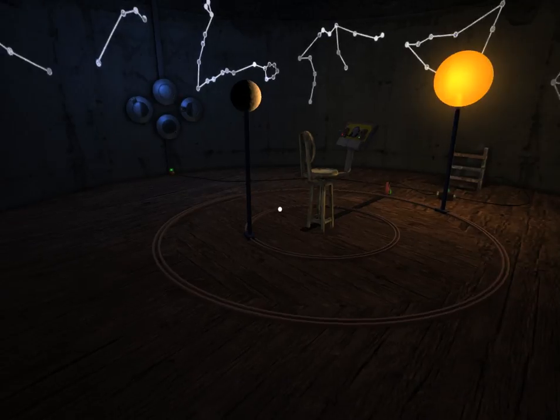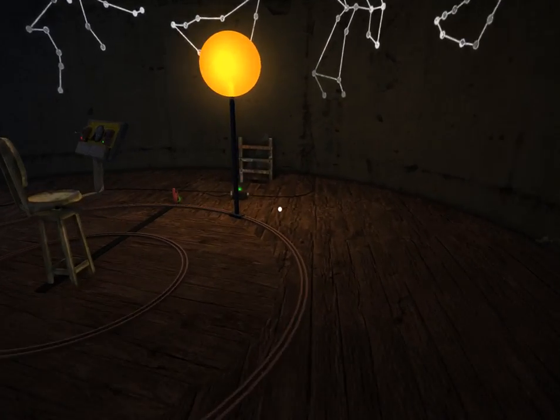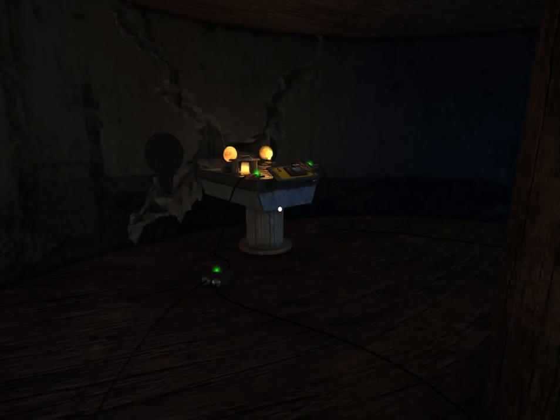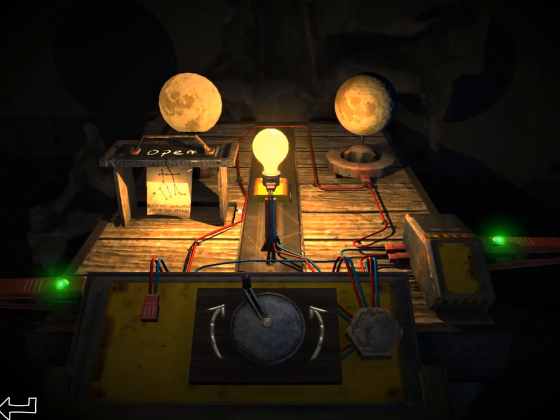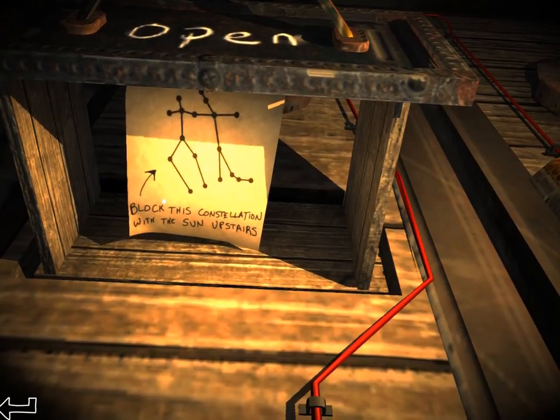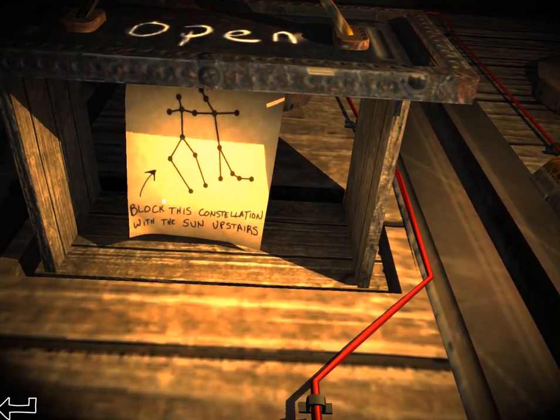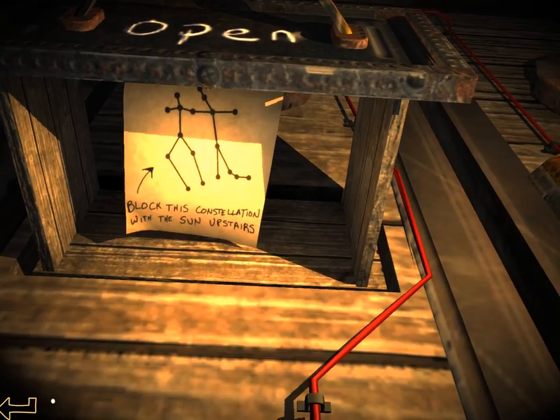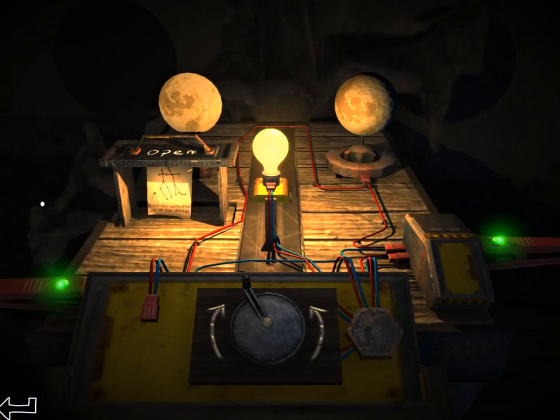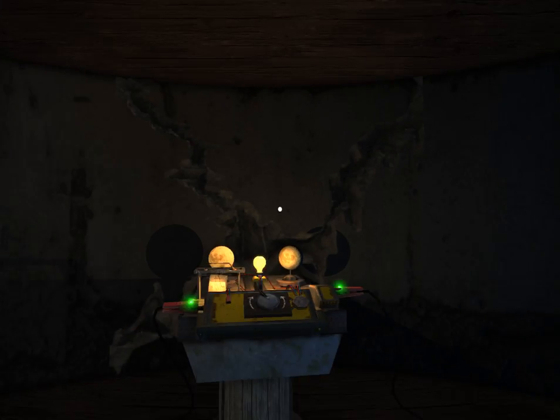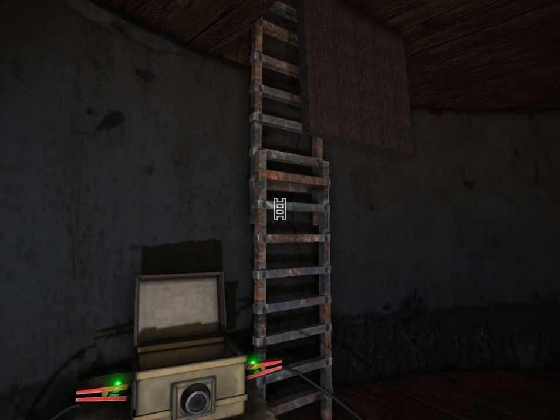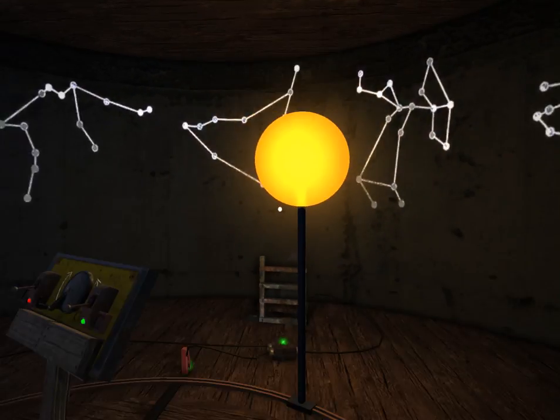Is that way the moon is blocking the sun from shining on Gemini? That doesn't seem to have done much of anything, so let me go back and read what those instructions are again. I could just have it wrong. In fact, I probably do. Block this constellation with the sun upstairs. Let's back away from this. Because I thought I had it blocked, but you know what? I am not an expert on astronomy, so I would not be sure.